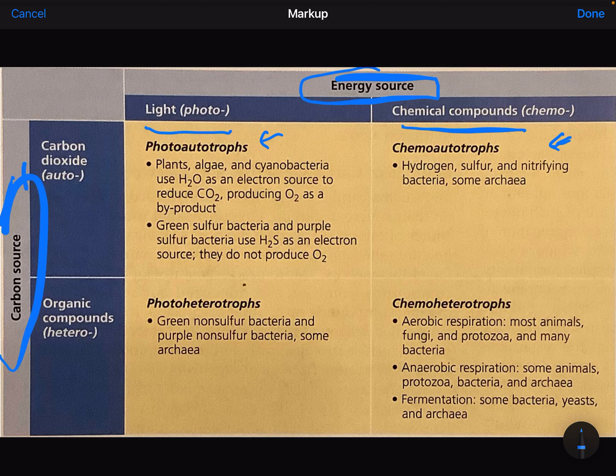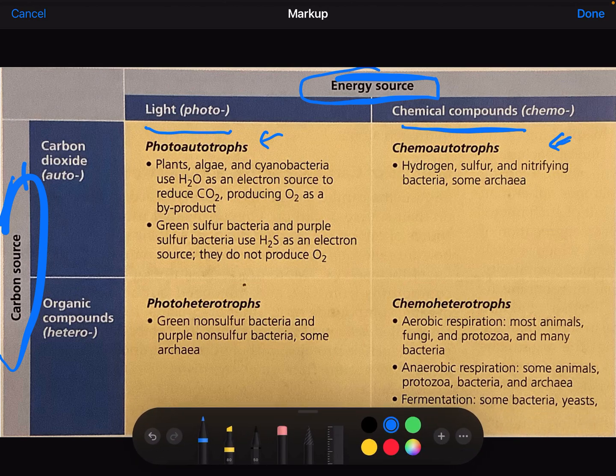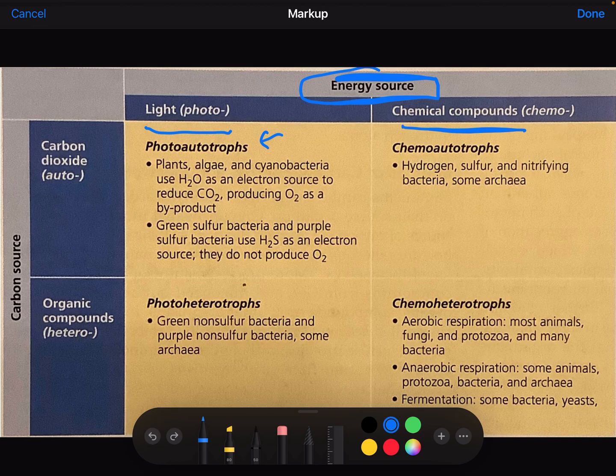Along this side, along the y-axis here, we have the carbon sources. There are a number of different carbon sources that we can have. Why are carbon sources important? Why are we talking about that and not sources of nitrogen or phosphorus?